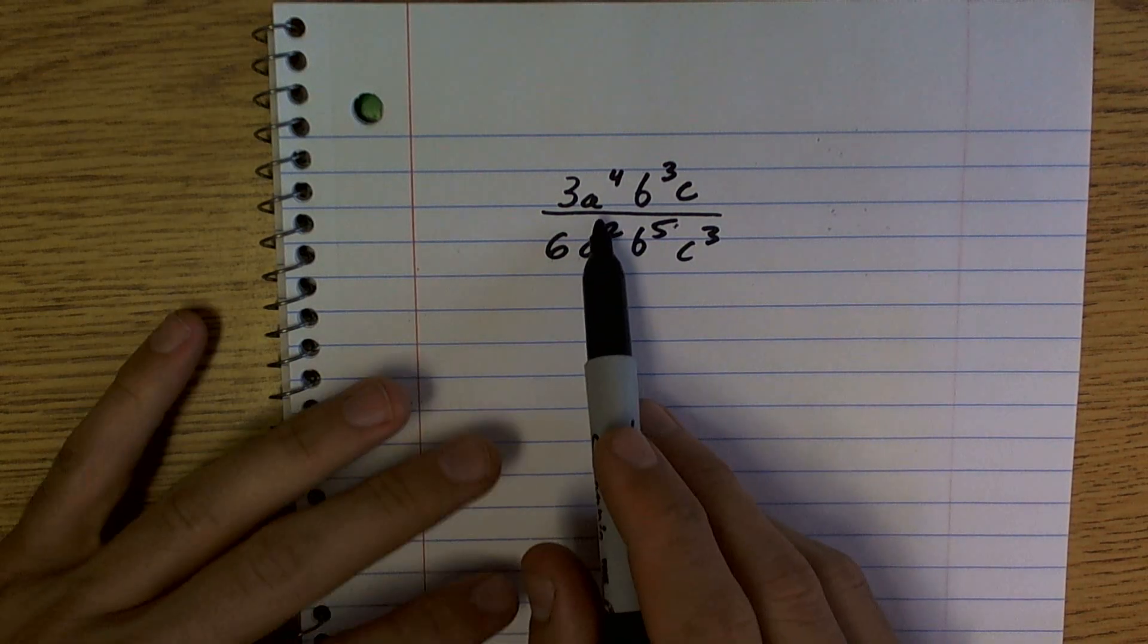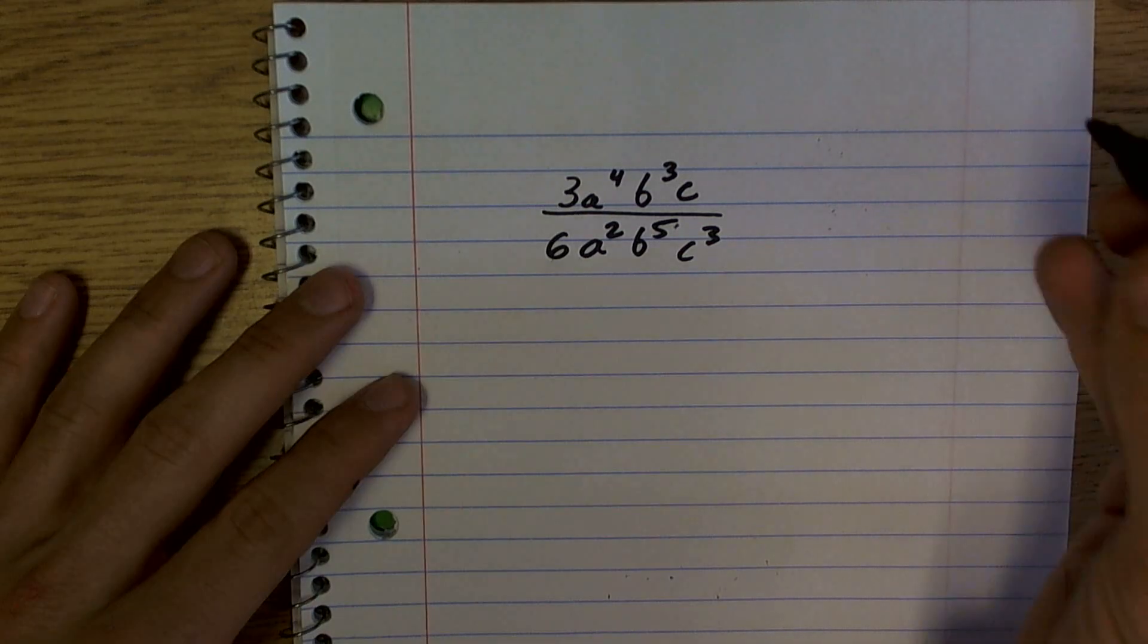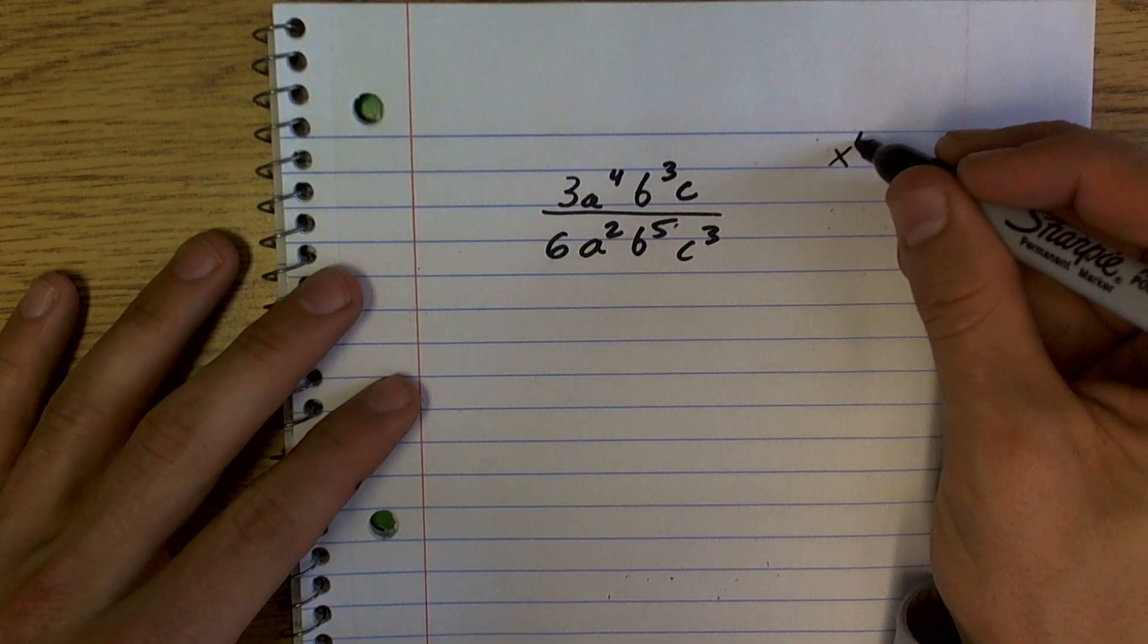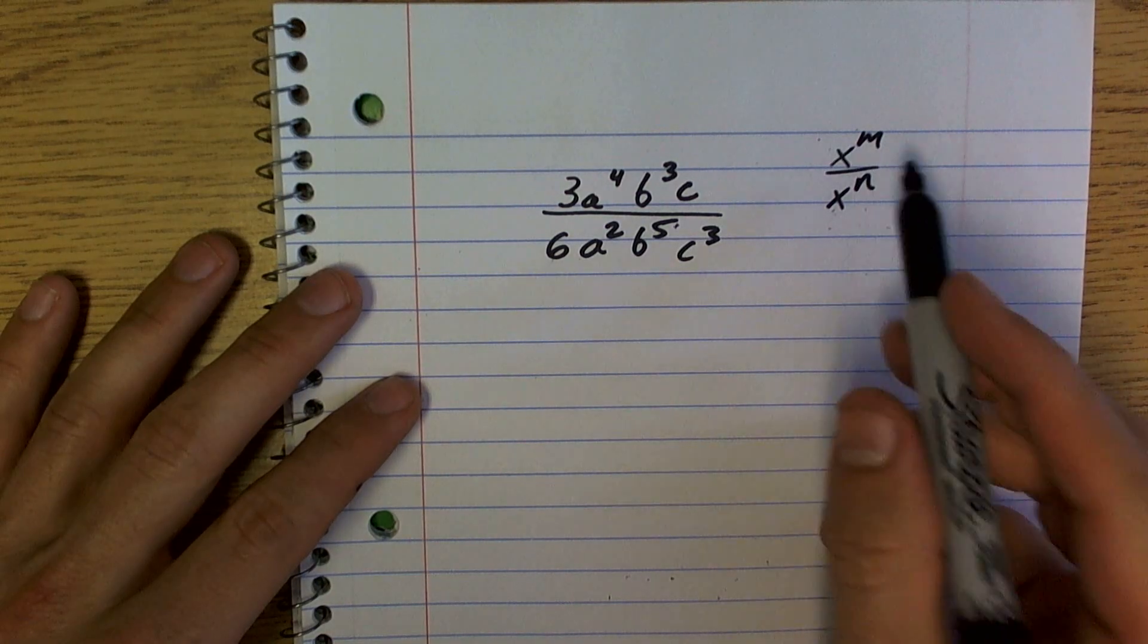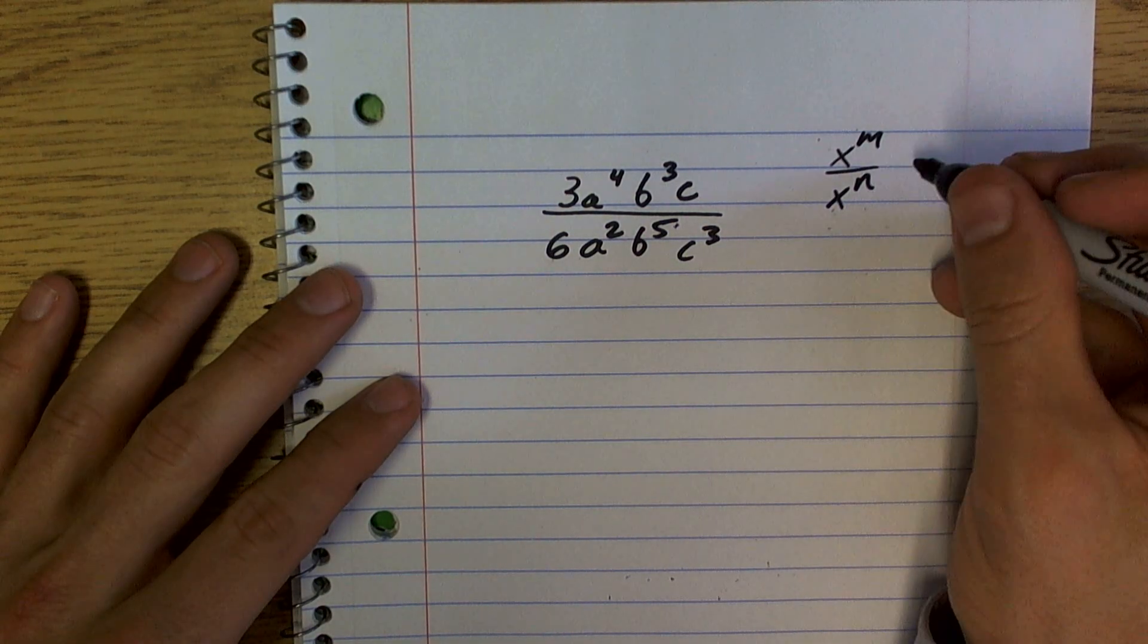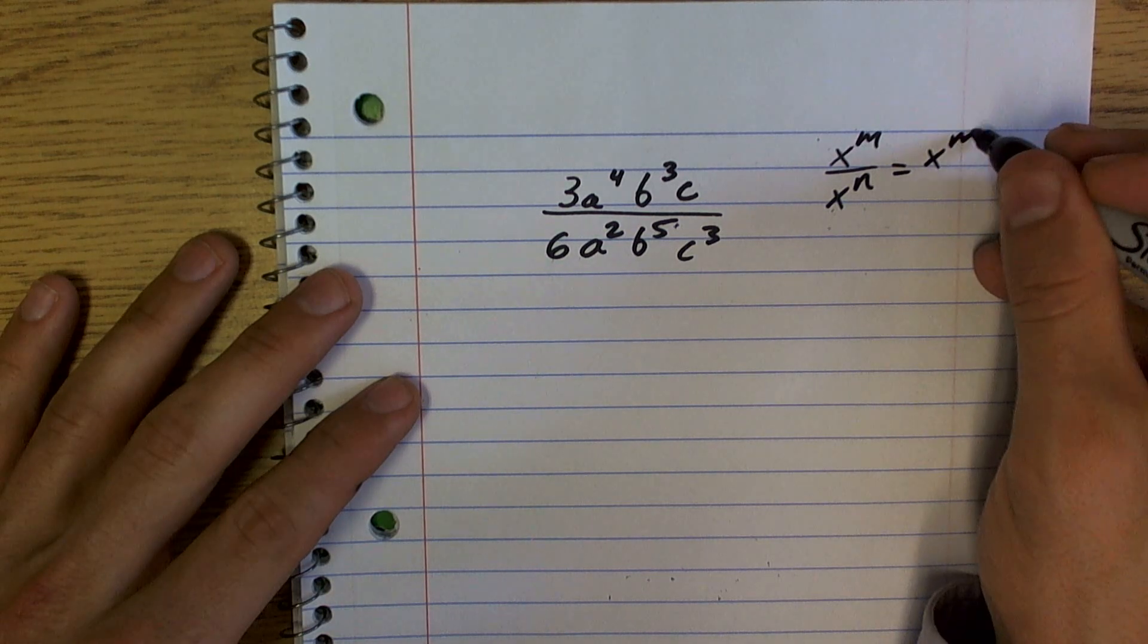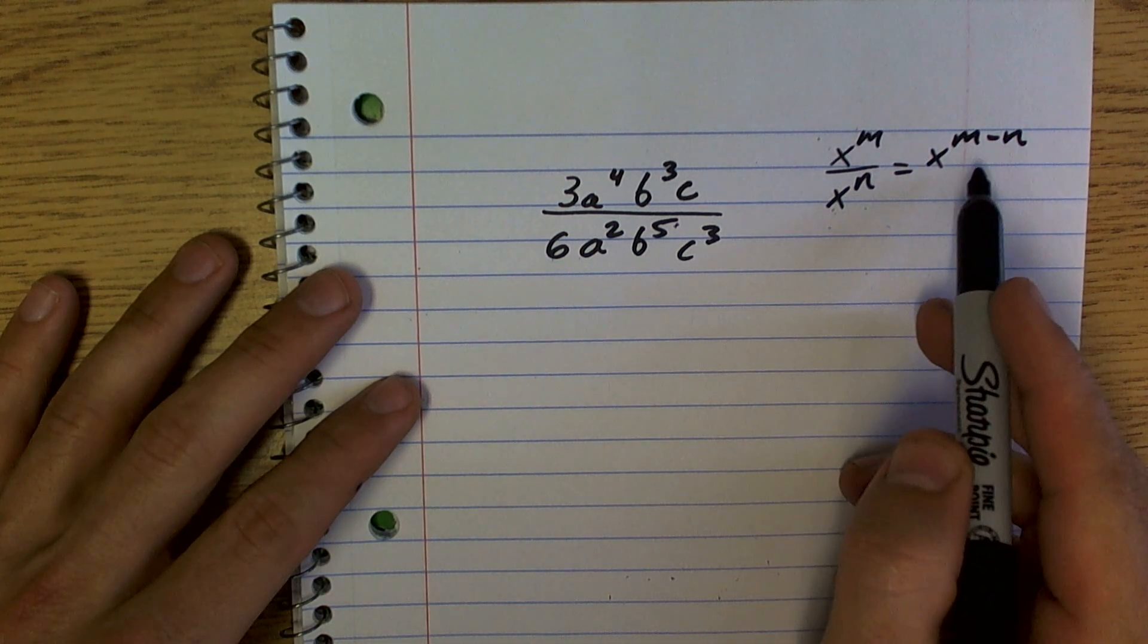Same exact thing. Now what we want to do is, again, we just want to remember our rules of exponents. Our rules of exponents: we have a number with an exponent divided by the same base of that number. We're going to take our exponents, and as long as they both have exponents, we're going to subtract the exponents.